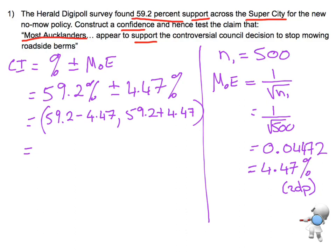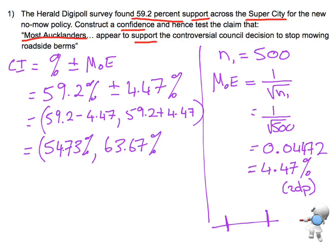Notice I did the minus one first, because when I write a confidence interval in brackets, think about it in terms of a number line — I always put the smallest number first, then the biggest. So 59.2 minus 4.47 gives me 54.73%, and 59.2 plus 4.47 gives me 63.67%. So the confidence interval goes between 54.7% and 63.7%.